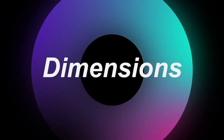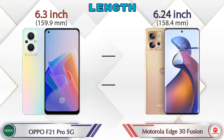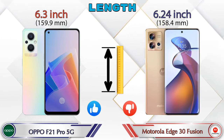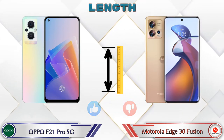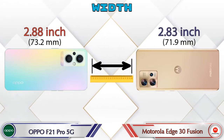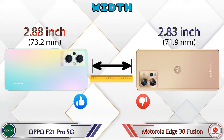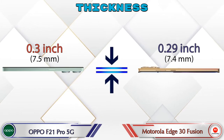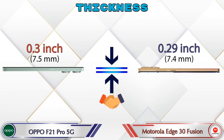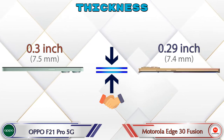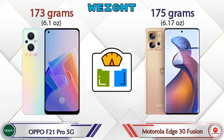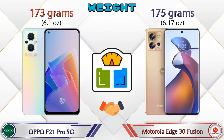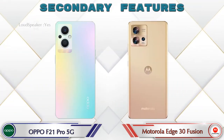Now let's check the dimensions. Length: the F21 Pro 5G is 6.3 inches and the 30 Fusion 5G is 6.24 inches, which is less. Width: the F21 Pro 5G is 2.88 inches and the 30 Fusion 5G is 2.83 inches, also less. Thickness: the F21 Pro 5G is 0.3 inches and the 30 Fusion 5G is 0.29 inches — almost similar. Weight: the F21 Pro 5G is 173 grams and the 30 Fusion 5G is 175 grams, which are almost similar.